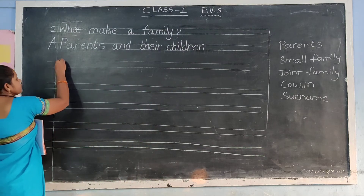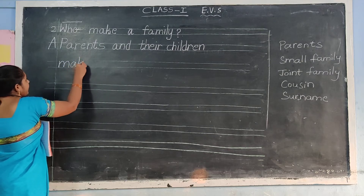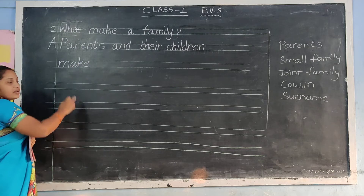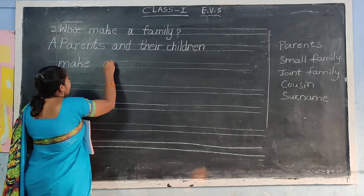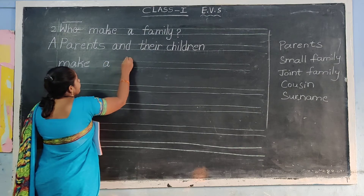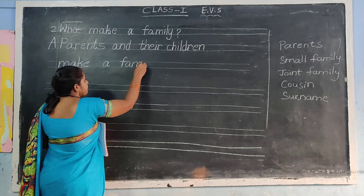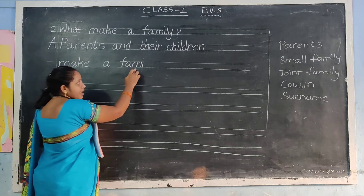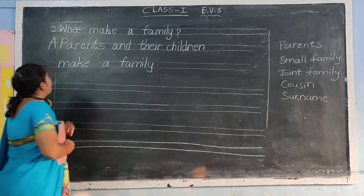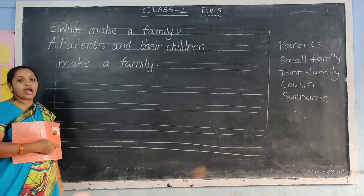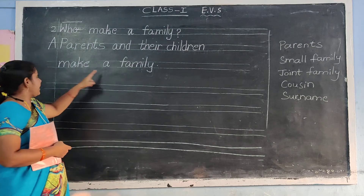M-A-K-E — make. Finger gap. A. Finger gap. F-A-M-I-L-Y — family. Full stop. Who make a family? Parents and their children make a family.